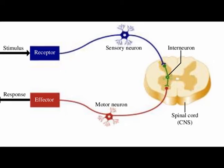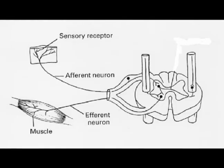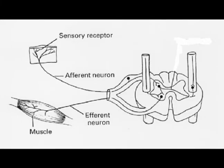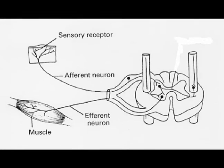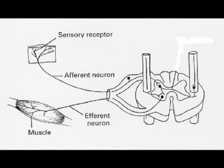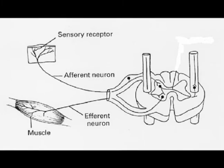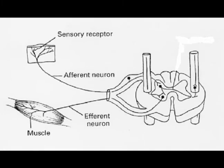The pathway initiates in the muscle spindle. The myotatic reflex, also known as the muscle stretch reflex and the deep tendon reflex, occurs when the stretch receptors within the muscle are activated.